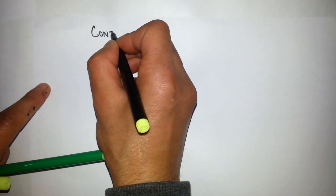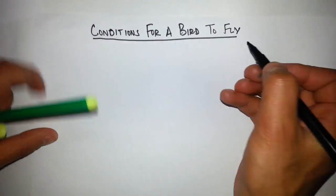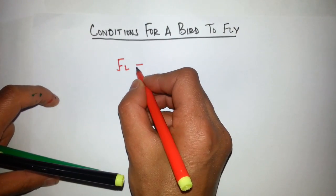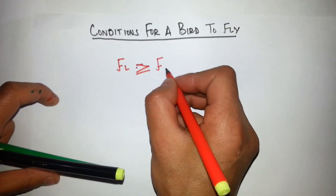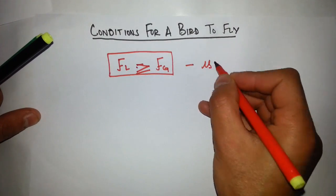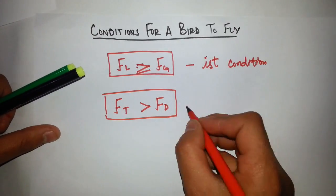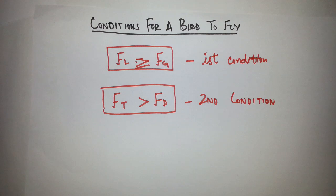Now, conditions for a bird to fly: FL, the force due to lift, must be equal to or greater than Fg. FT must be greater than FD - the force of thrust should be greater than drag force, otherwise the bird cannot fly.